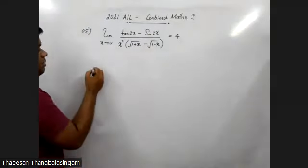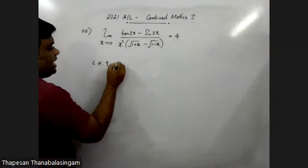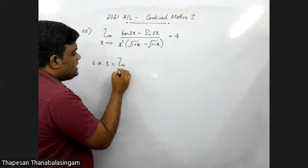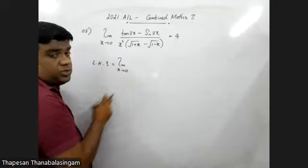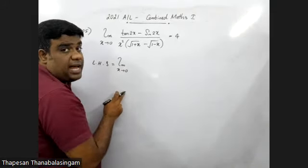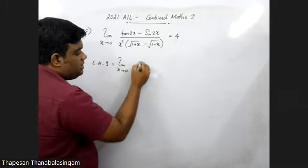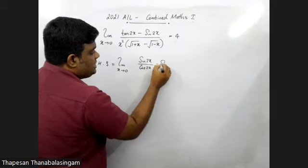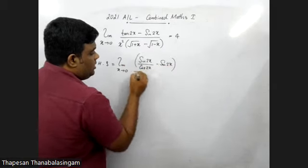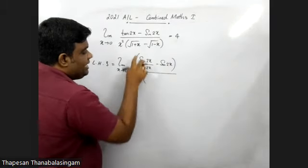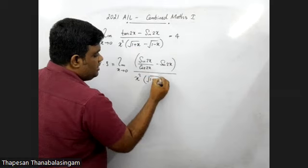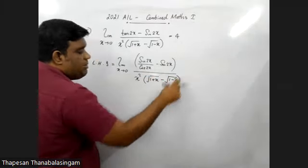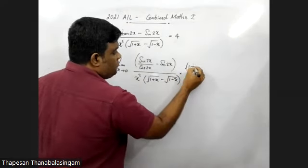So now I will talk about the hillages, so this is 6. Limit x tends to 0, x tends to 0, tan 2x tends to 0, sin 2x over cos x, minus sin 2x.